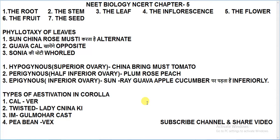Guava — opposite type. Opposite type examples are guava and Calotropis. For whorled type, the example is Alstonia.